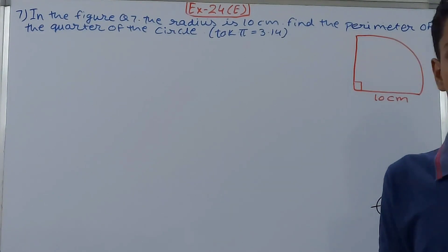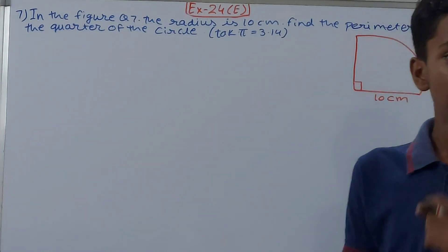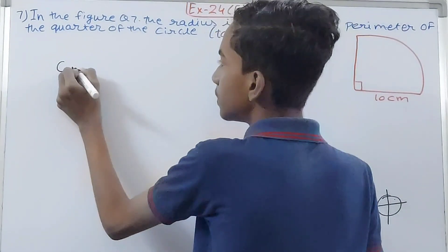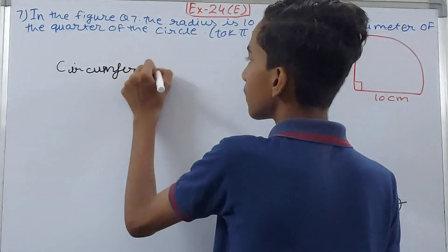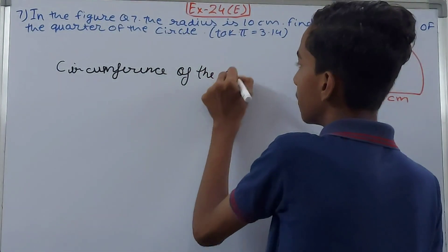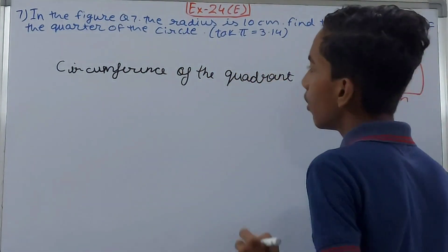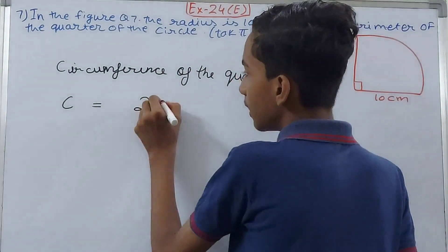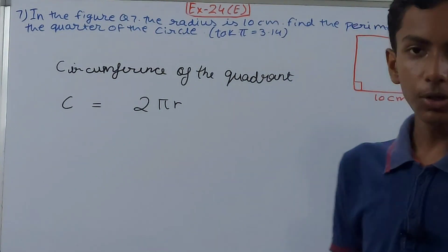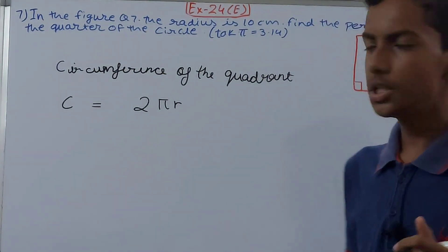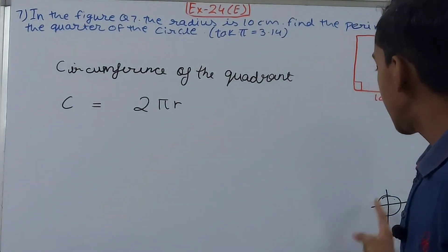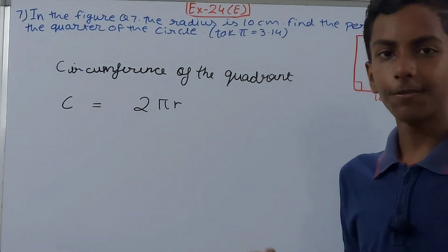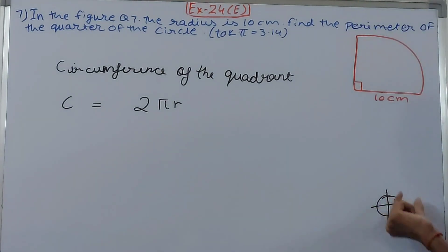So see here what we are going to do. First we will find the circumference of this quadrant. How are we going to find the circumference? See, the formula for this is very simple. Circumference of the quadrant - this is the first thing we will find. Circumference is equals to 2πr. Okay, this will be there, but one more thing will be there which is 1/4. See, this will be the circumference of the entire circle, but we need circumference of only the quadrant, not the entire circle. So if the entire circle circumference we know, we can find it for one part, right? How? Divide this by 4.